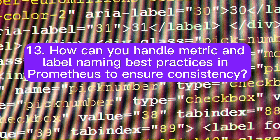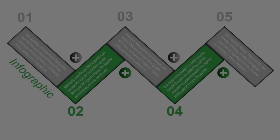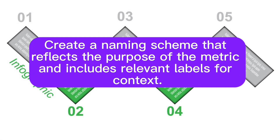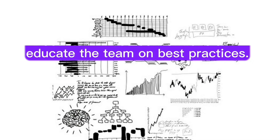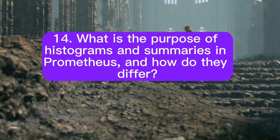How can you handle metric and label naming best practices in Prometheus to ensure consistency? To ensure consistency in metric and label naming, establish naming conventions and guidelines. Create a naming scheme that reflects the purpose of the metric and includes relevant labels for context. Document these conventions and educate the team on best practices.